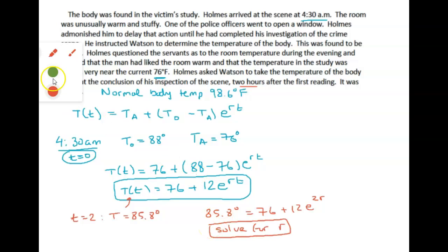Now you want to do one more step. After you solve for r and you put it in here, figure out what r is and go back to this equation. Now you want to go backwards and see when was the body at 98.6 degrees.